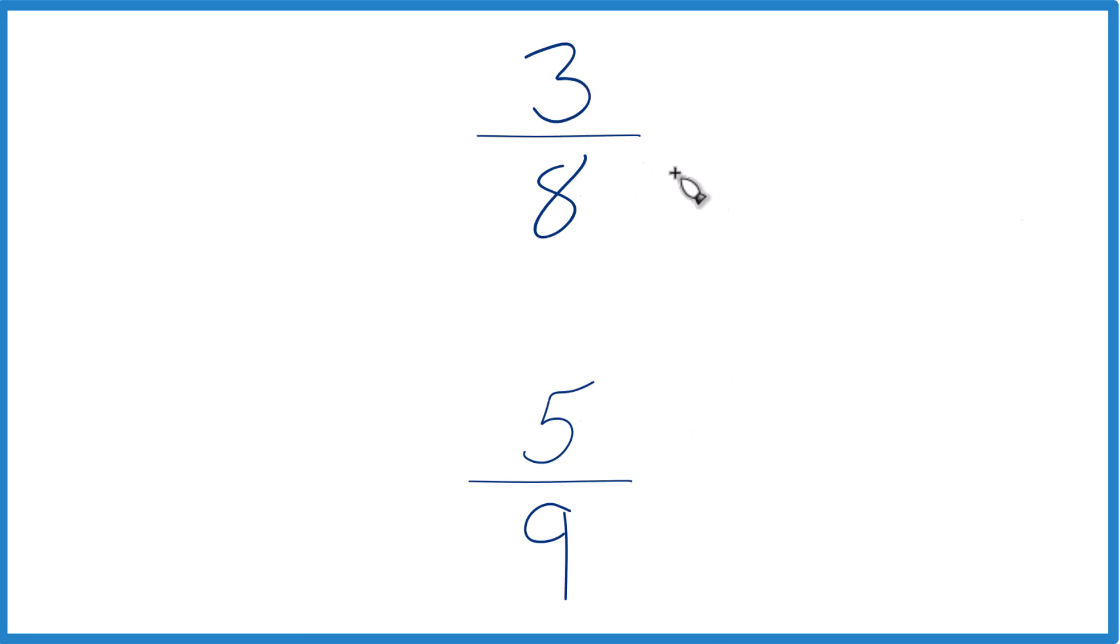The other way to do it, we could find a common denominator. Right now we have 8 and 9. But if we had this in common, our denominator, we just compare the numerators.